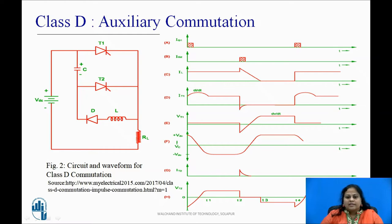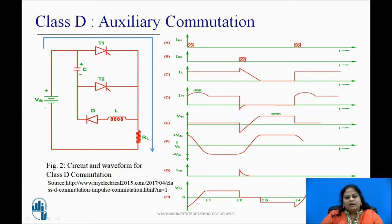Let us now see class D type commutation method. It is also known as auxiliary commutation method. The figure shows the circuit and waveform for class D commutation method. In this, the auxiliary thyristor T2 is used to commutate the main thyristor T1. Thyristor T1 and load resistance RL form the power circuit, which is the main circuit. Whereas the inductor, diode, and SCR T2 form the commutation circuit.